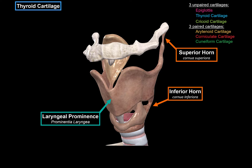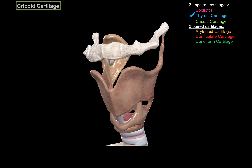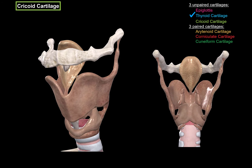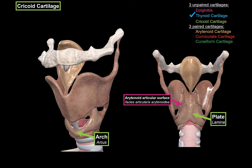Next is the cricoid cartilage, here in light green, located below the thyroid cartilage. The cricoid cartilage looks different depending on which side you're looking from. Anteriorly, it has an arch protruding forward. Posteriorly, it has a plate with two important surfaces: the arytenoid articular surface, where the arytenoid cartilage binds to the cricoid cartilage forming a joint, and the thyroid articular surface, which forms a joint with the inferior horn of the thyroid cartilage.